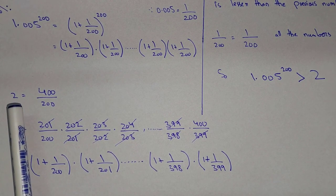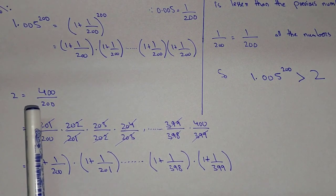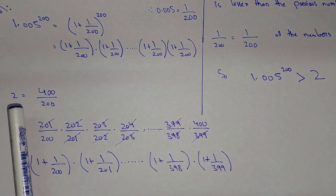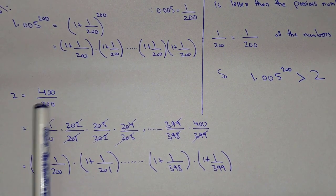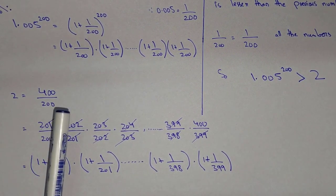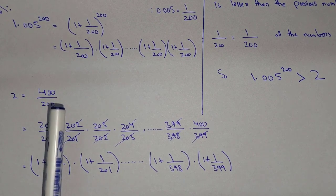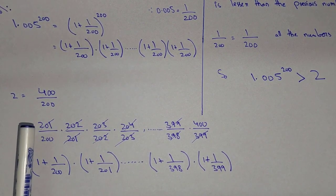On the other hand, here we have 2 that is equal to 400 over 200, so we can write it as 400 over 200. And if we want to write in a form similar to this one, then what we will do is 201 over 200 into 202 over 201 into 203 over 202.